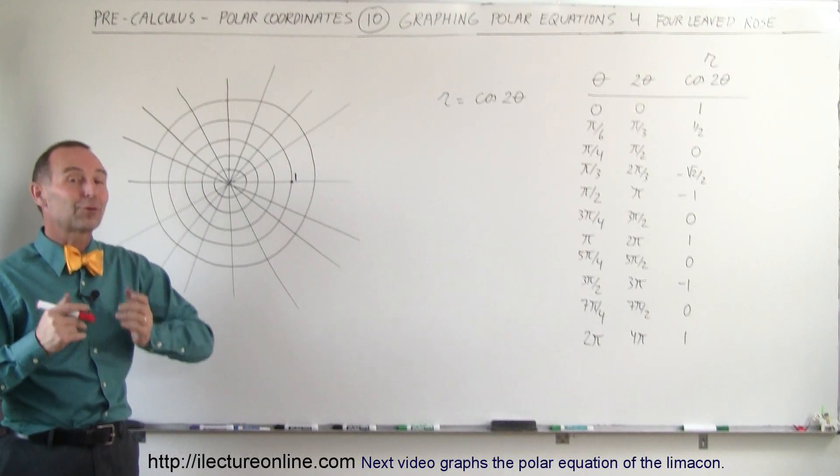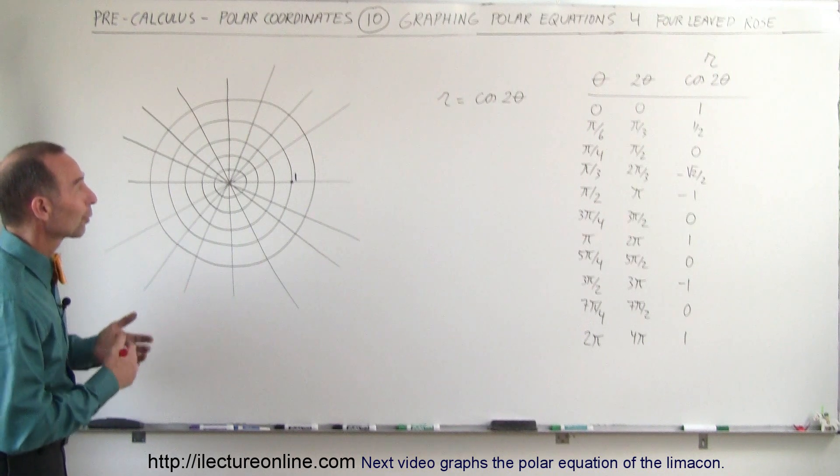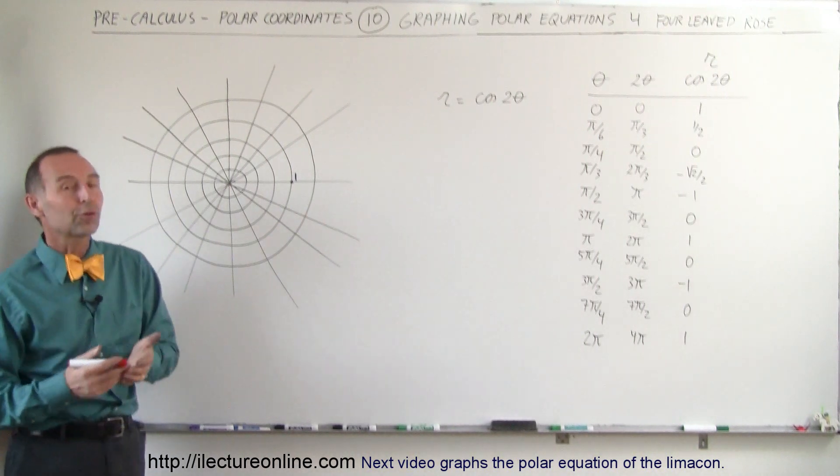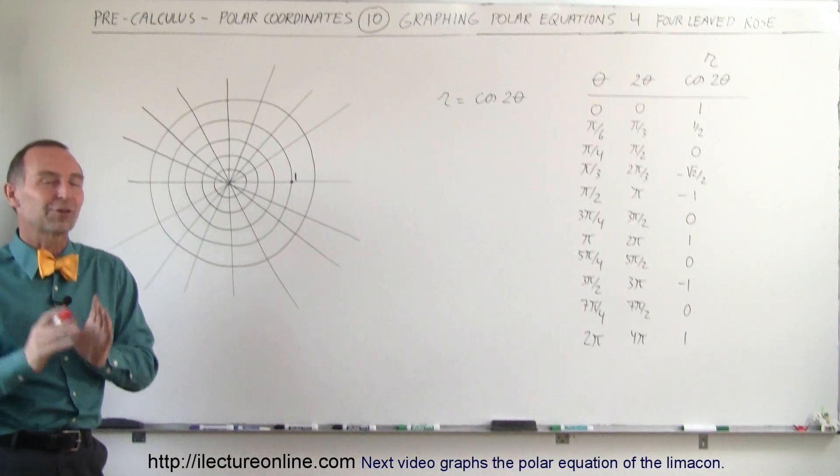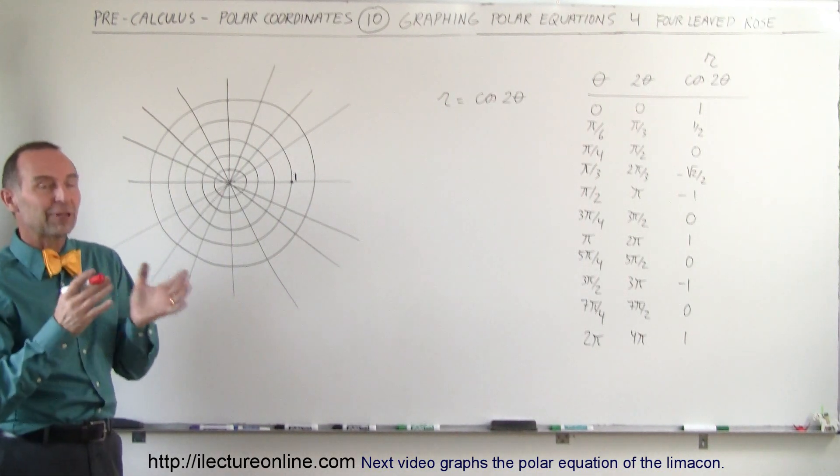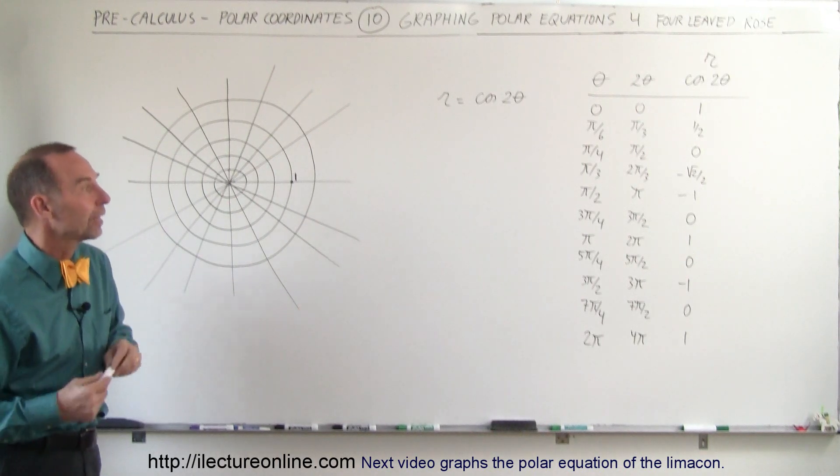Welcome to ElectronLine. Now we're going to graph something that's kind of unique to polar graphs and polar equations. R equals the cosine of 2 theta, or 3 theta, or 4 theta, gives you some very interesting graphs. It's kind of like a little flower, and so they call this the four-leaved rose. So let's graph R equals cosine of 2 theta.